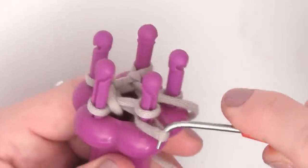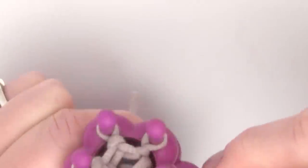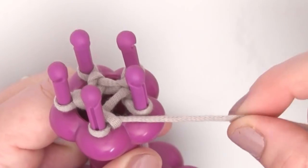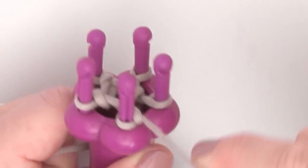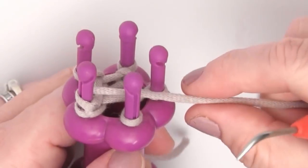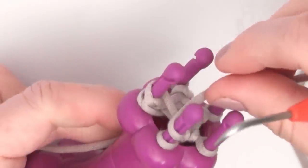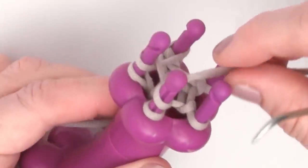Okay, and now it's wrap time again. We just wrap around all five pegs and we use the hook on all five pegs and keep repeating this process until your I-cord is the length you desire.